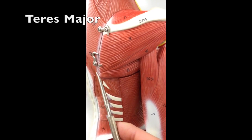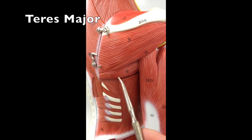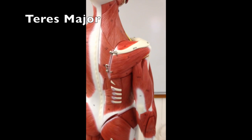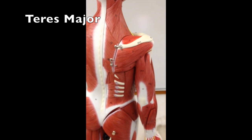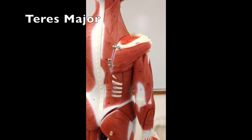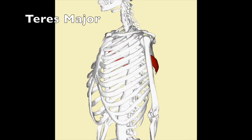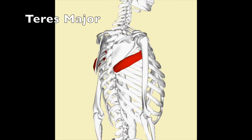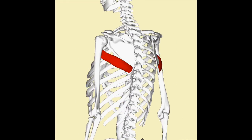The teres major is a muscle that can extend the shoulder, adduct, and rotate the arm medially. It has origins on the lateral border of the scapula, and it inserts on the intertubercular sulcus of the humerus.